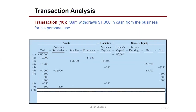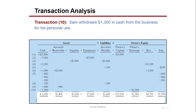Transaction 10: Sam withdraws $1,300 in cash from the business for personal use. Since owners are separate from the company, this withdrawal decreases cash by $1,300, and the owner's drawing account is also minus $1,300, which is deducted from owner's equity.